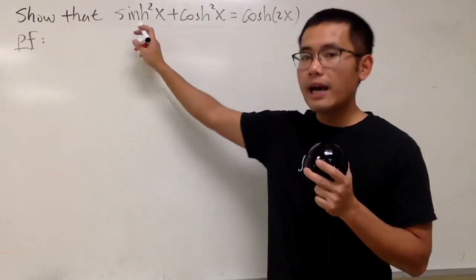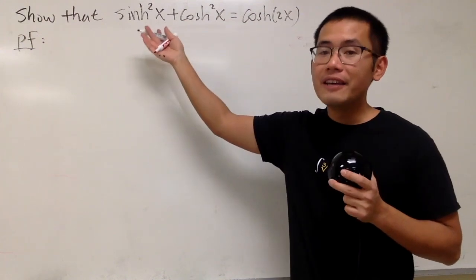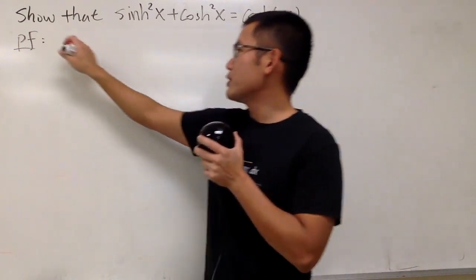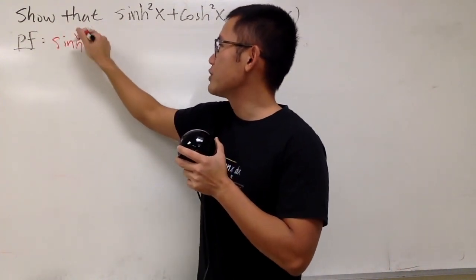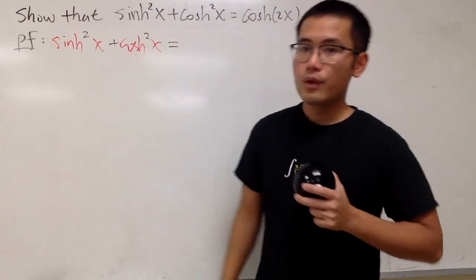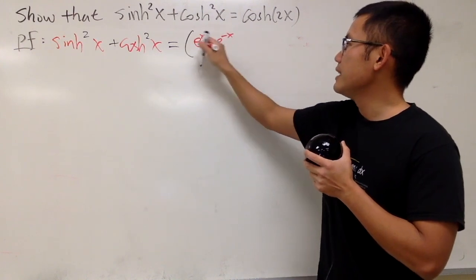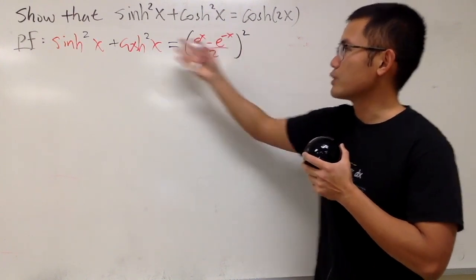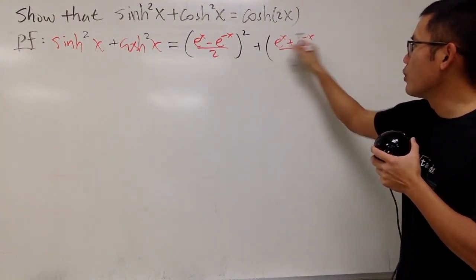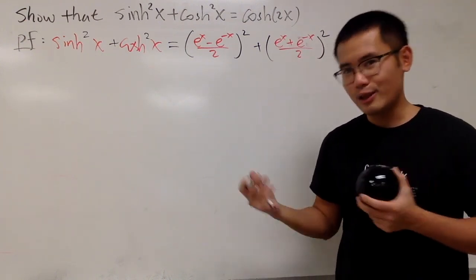Now we show that sinh squared x plus cosh squared x is not equal to 1 — because these are hyperbolic functions — and in fact it equals cosh(2x). For sinh squared x we write (e to the x minus e to the negative x, over 2) squared, and for cosh squared x we write (e to the x plus e to the negative x, over 2) squared. We multiply out, combine terms, and hope for the best.